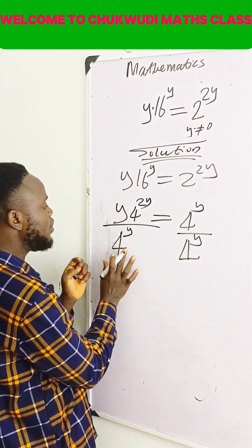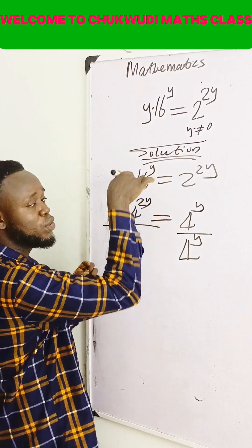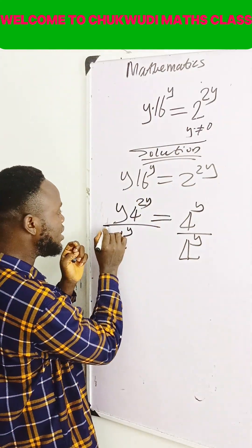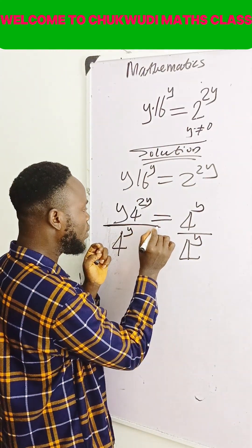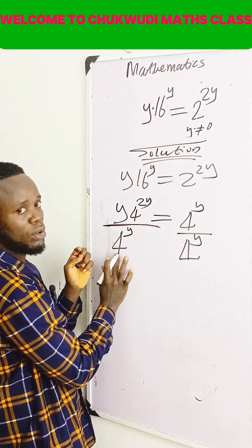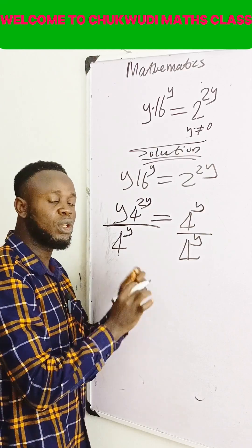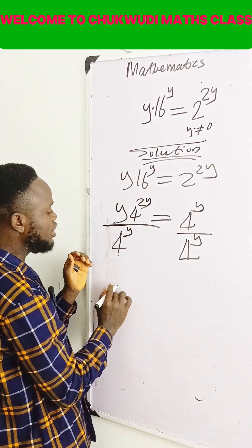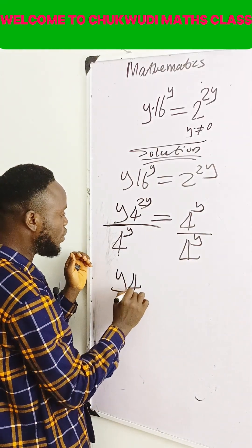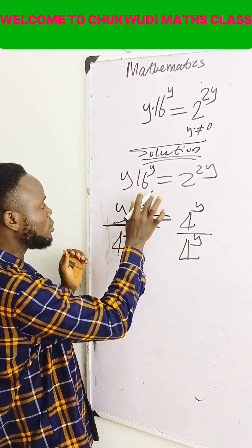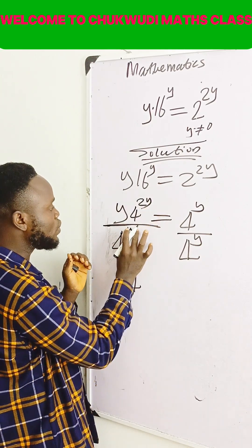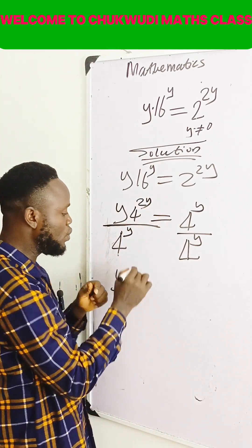Then 4 raised to the power y divide 4 raised to the power 2y. This is division. The bases are equal — that's the division law of indices. Pick one of the bases, which is 4, so subtract the exponents: 2y minus y will give you y.